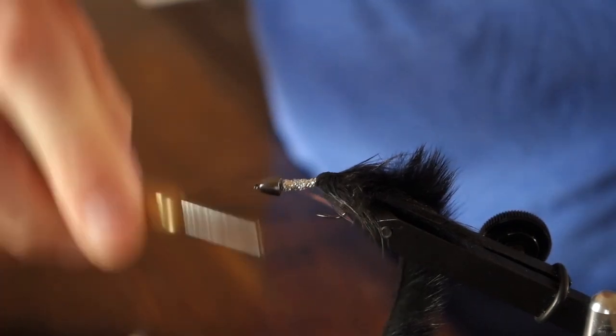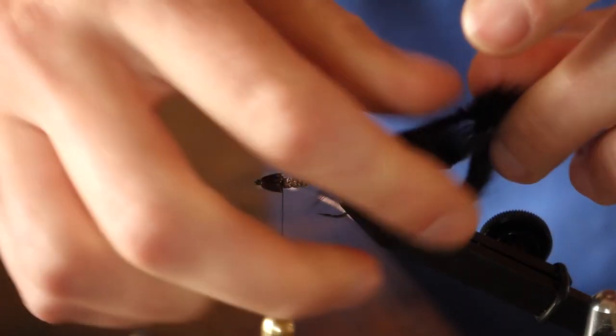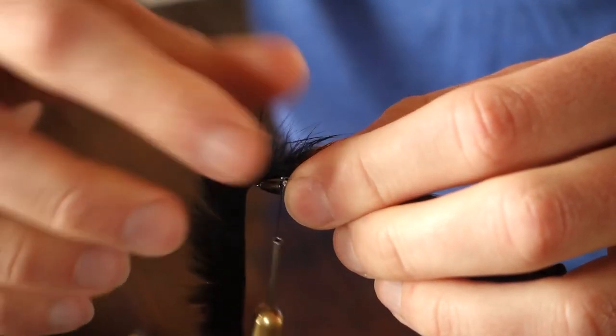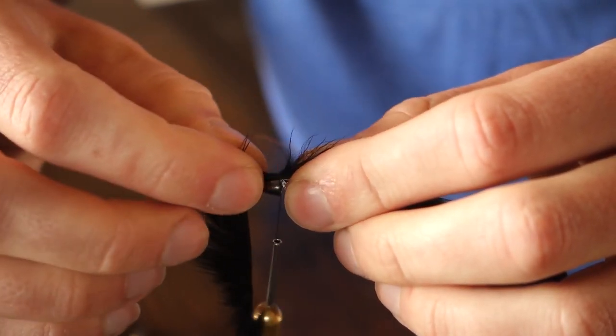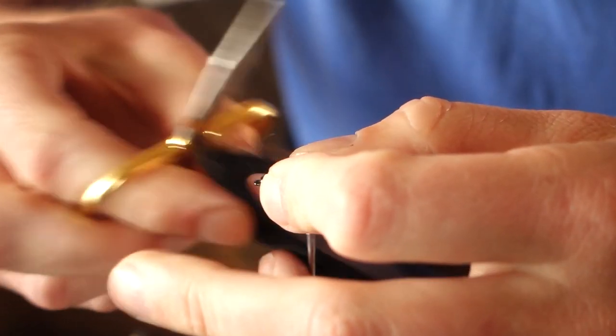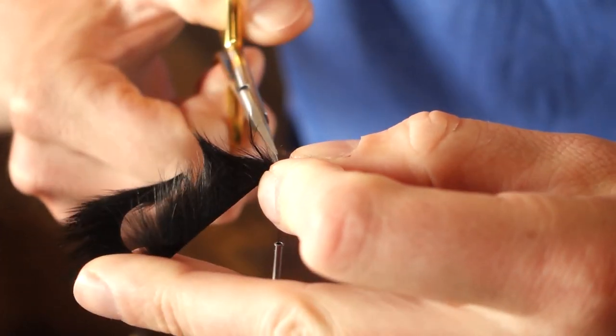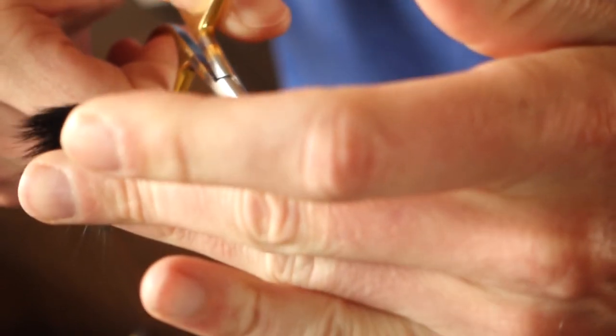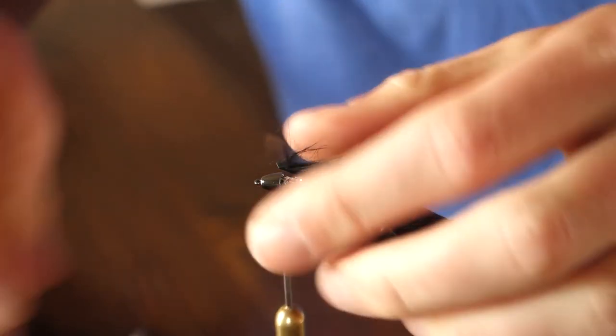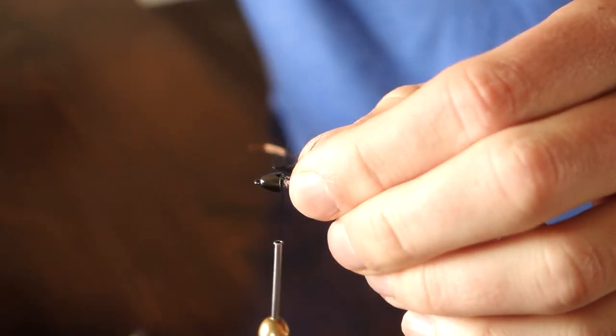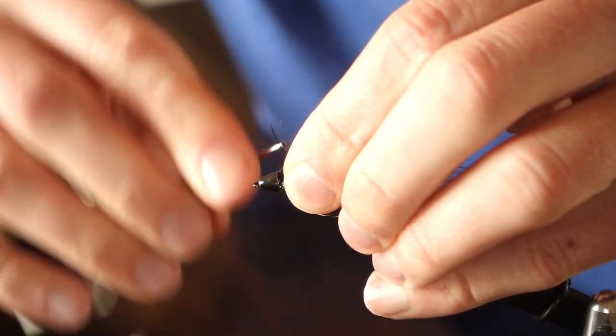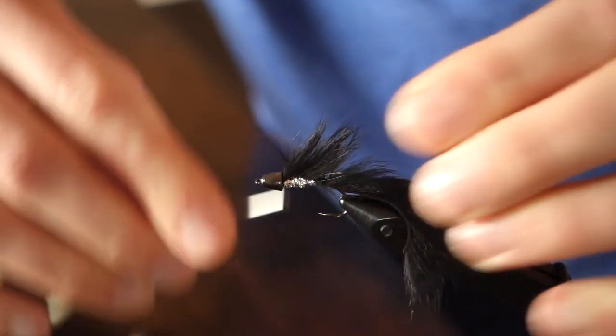Now I'm going to lay the remaining zonker strip back across the spine of the body of the fly. I'm going to measure to where it just overlaps the back of the cone head, and I'm going to cut it off there. This will give me just a little bit of excess leather strip from that zonker. I'm going to pull off some of the fibers right at the front of the zonker strip to have the exposed leather. Then I can slide that exposed leather underneath the cone head and tie it off there. This will give a really clean back to the fly and makes a nice mohawk.